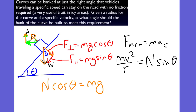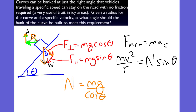We can use these two equations and plug them in. The normal force equals mg divided by cosine of theta. If we bring this in, we will have mv squared over r equals mg sine over cosine. I hope you can see that's tangent. So we have mv squared over r equals mg tangent of theta, because that was sine over cosine.